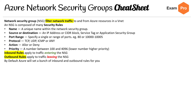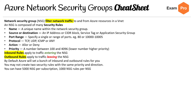By default, Azure will set a bunch of inbound and outbound rules for you. You may not create two security rules with the same priority and direction. You can have 5000 NSGs per subscription and 1000 rules per NSG.